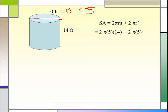Now, 5 times 14 is 70. 5 squared is 25. 2 times 70 is 140π plus 50π, which would give me 190π.